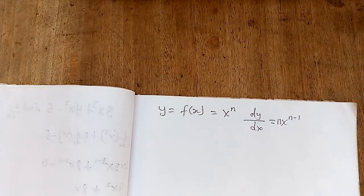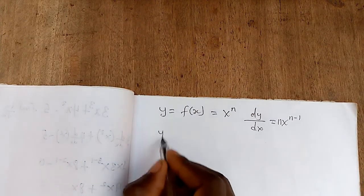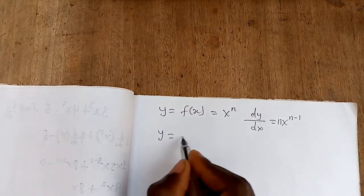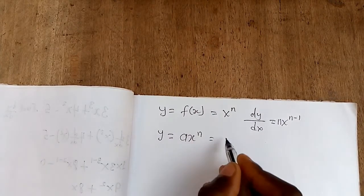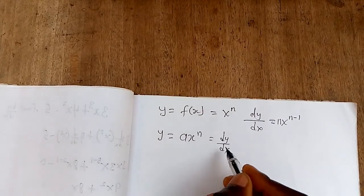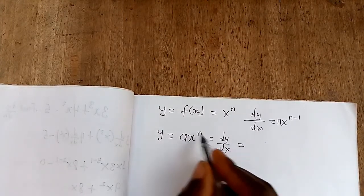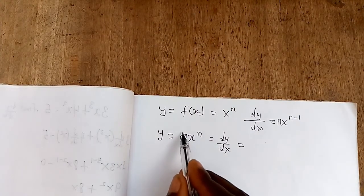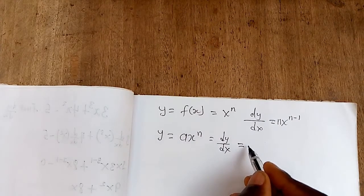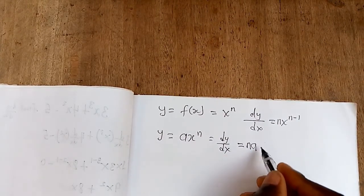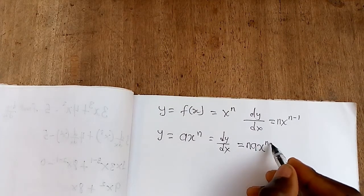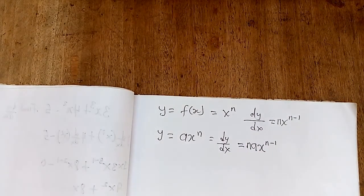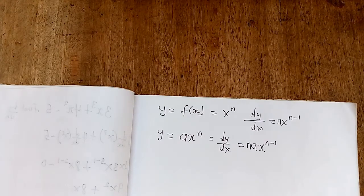The second rule: if y is equal to a constant a times x to the power n, then dy/dx is found by bringing the n down to multiply everything. You get n times a times x, and then subtract 1 from the exponent n.